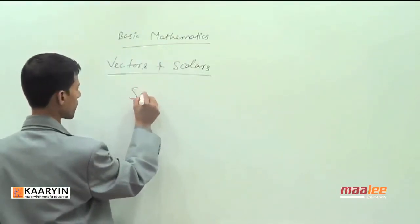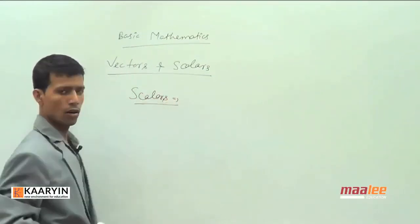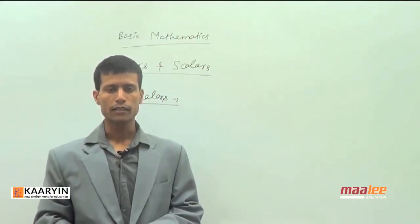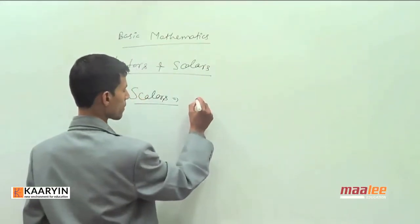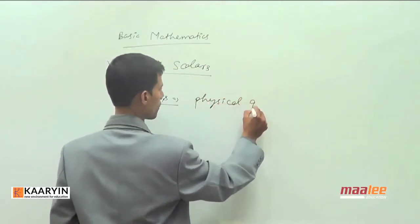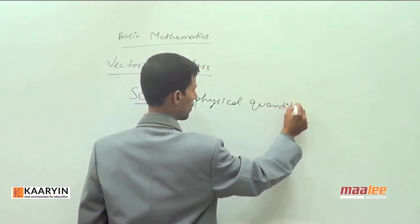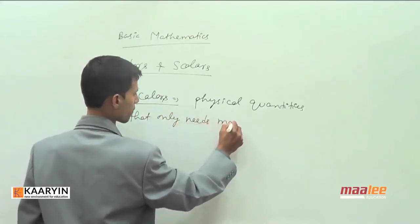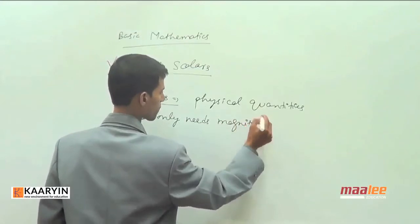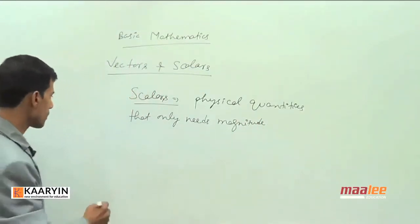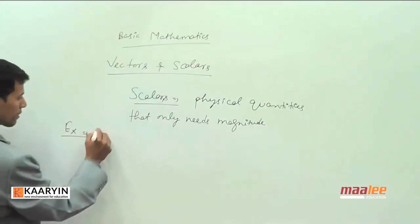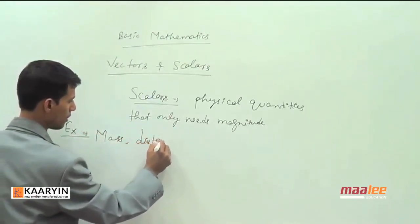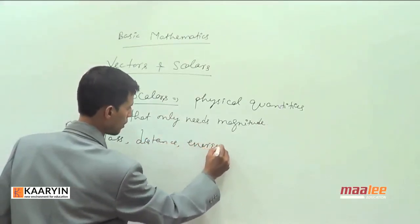First we will talk about the meaning of scalars. Scalar quantities are physical quantities that require only magnitude to define — they do not need any direction to define. Examples of scalar quantities include mass, distance, and energy.